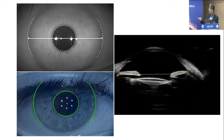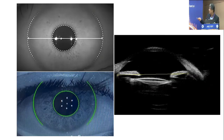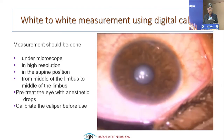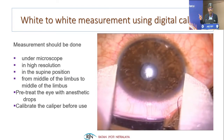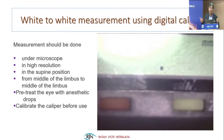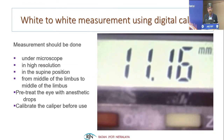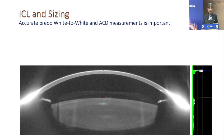IOL Master 700 can measure WTW but is not fully accurate. The internal sulcus-to-sulcus measurement is also available. Measurement should be done under the microscope at higher resolution with the digital caliper in a supine position, from the middle of limbus to the middle of limbus on the other side — giving the digital value, for example 11.16mm in a particular eye. We should calibrate the caliper before use. Accurate preoperative WTW and AC depth measurement determines what size ICL to use — whether 12.1, 12.6, or 13.2.